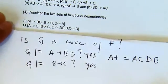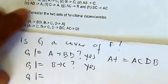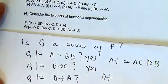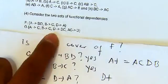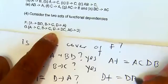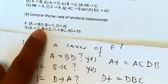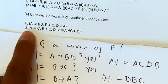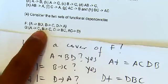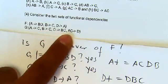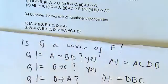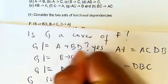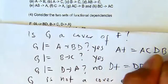Finally we check if G can logically imply D→A. We compute D+ using G. Starting with D, we get D, then from D→BC we get B and C. From B we get C, and from C we get nothing new. There is no way to derive A. So the answer is no — G is not a cover of F.